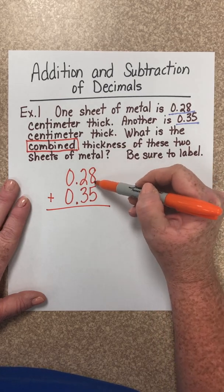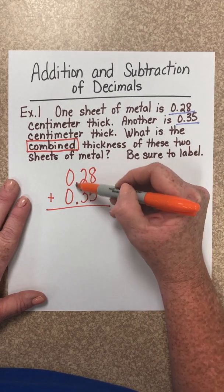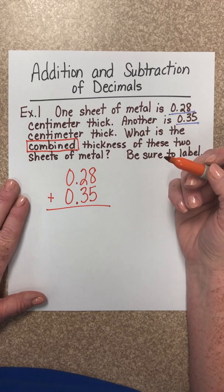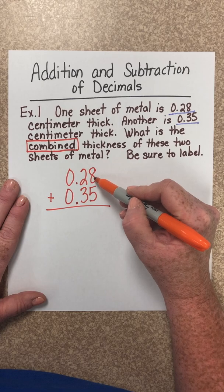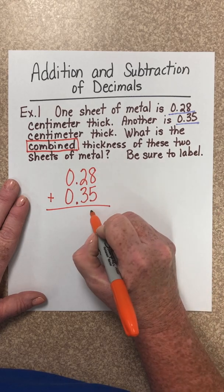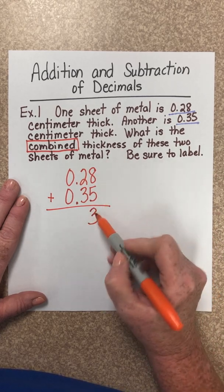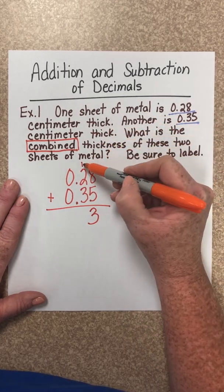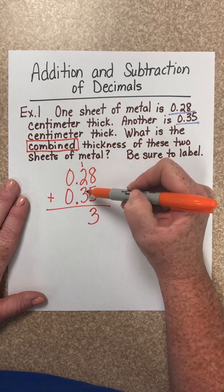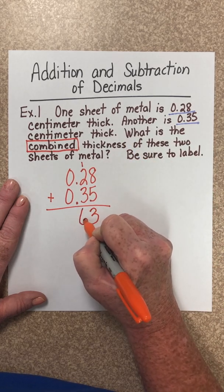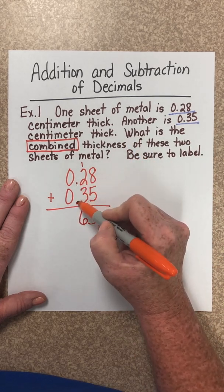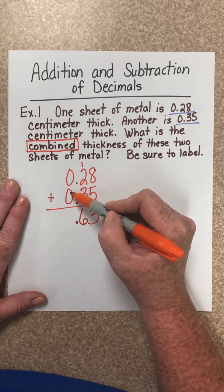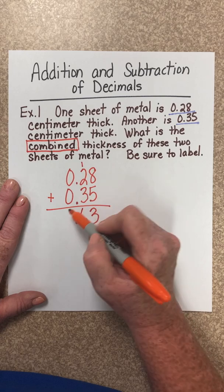Notice that I've lined every column nice and neat so that we don't get confused. Let's begin. 8 plus 5 is 13. So I bring the 3 here, carry the 1. 1 plus 2 plus 3 is 6. I bring down that decimal point straight down. And 0 plus 0 is 0.